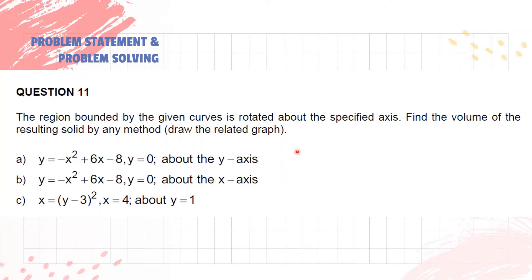We will be solving question 11, where the region bounded by a given curve is rotated about a specific axis — find the volume of the resulting solid by any method. Part A: y equals negative x squared plus 6x minus 8, y equals 0, about the y-axis.